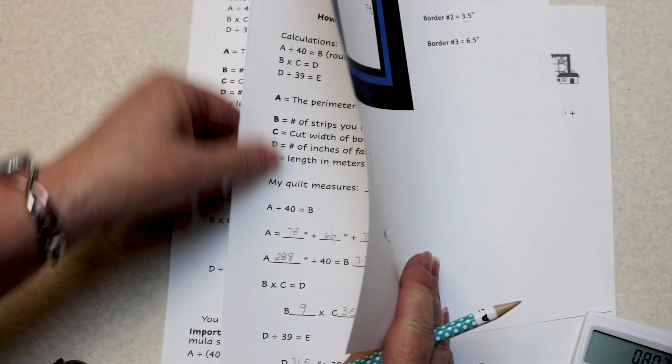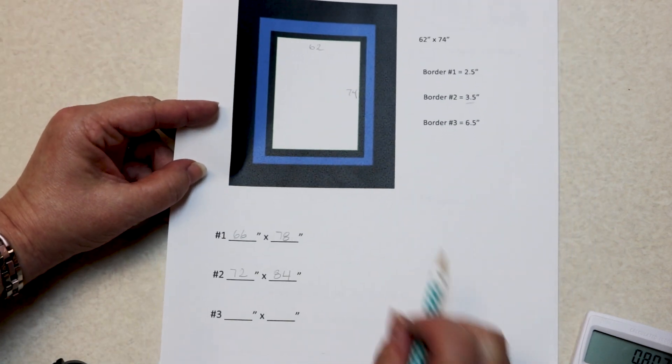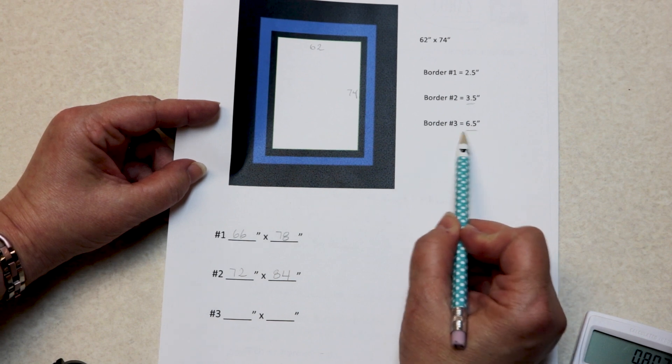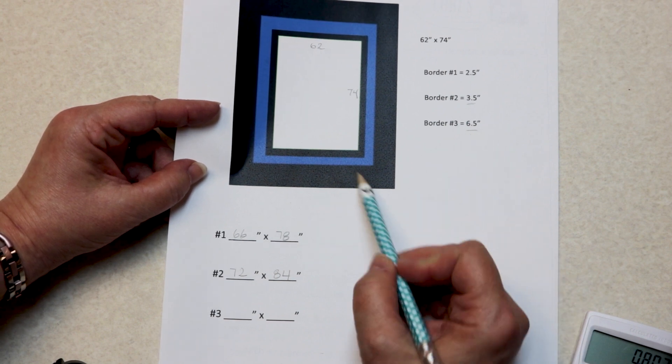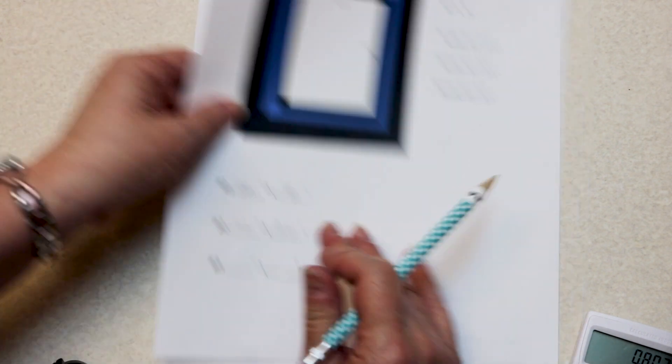Let's figure out that last border. This is an extra wide border, so we're going to change the math just a little. We have a six and a half inch cut for our big outside border. Let's do the math.